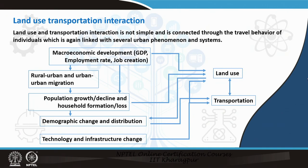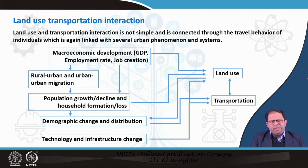While we have already studied land use and transportation, and to some extent their interaction, land use transport interaction is not simple. It is connected to travel behavior of individuals, which is again linked with several urban phenomena and systems. That means we have land use, we have transportation, and we have travel behavior in between, and this travel behavior is influencing many other urban phenomena and urban systems.